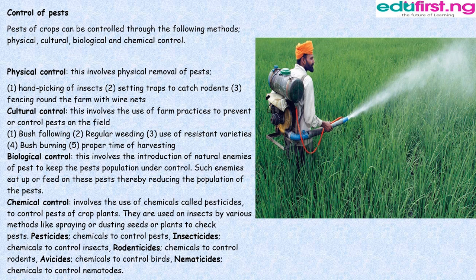Control of Pests. Pests of crops can be controlled through the following methods: physical, cultural, biological, and chemical control. Physical control involves the physical removal of pests: 1. Hand-picking of insects. 2. Setting traps to catch rodents. 3. Fencing around the farm with wire nets.